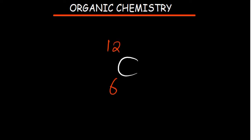A few things we need to know about the carbon atom: it has an atomic number of 6 and a mass number of 12. Looking at the atomic number of 6, we're able to come up with what we call the electron configuration. A basic electron configuration would be - we have 2 electrons followed by 4 electrons. But using the orbitals, we can also write the required electron configuration at this level.